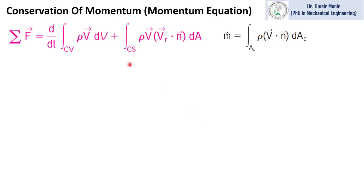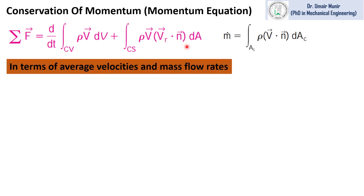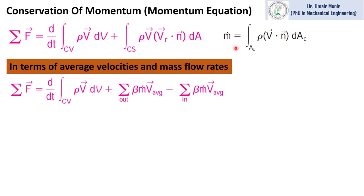We can now represent the momentum equation in its final form, which states that the sum of forces acting on a control volume is equal to the change in momentum inside the control volume plus the rate of momentum flux crossing the inlet or outlet due to mass flow. We can write this momentum equation in terms of average velocities and mass flow rates, using the definition of mass flow rate to replace the m-dot value.